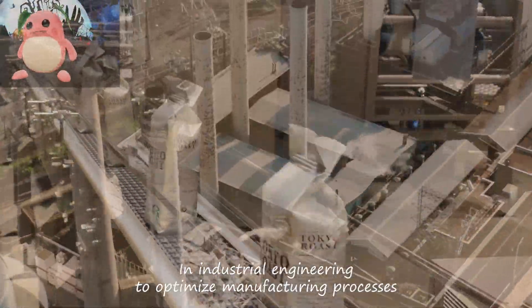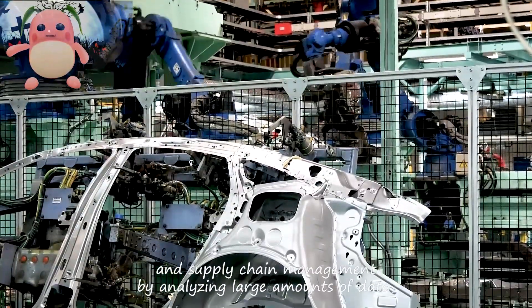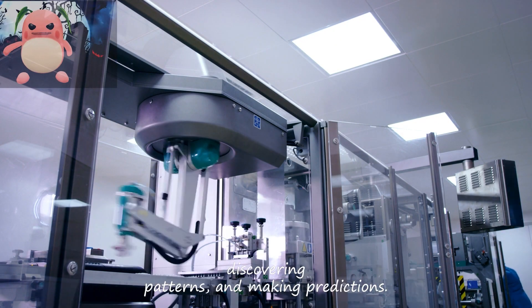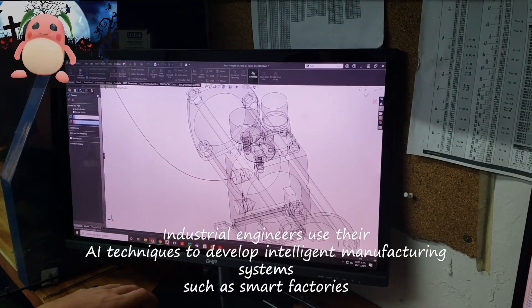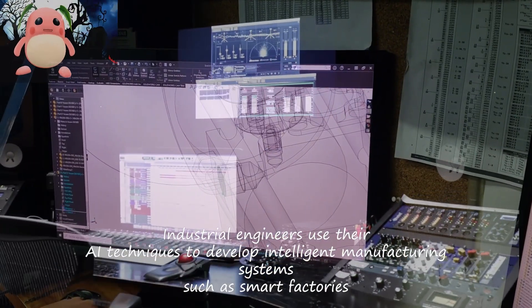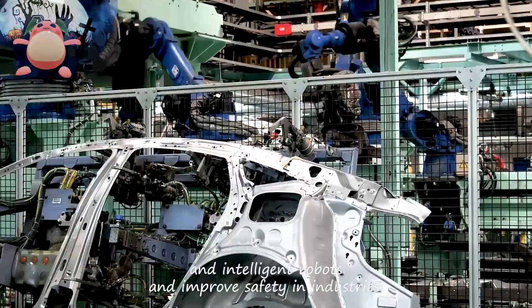In industrial engineering, AI is used to optimize manufacturing processes and supply chain management by analyzing large amounts of data, discovering patterns, and making predictions. Industrial engineers use AI techniques to develop intelligent manufacturing systems such as smart factories and intelligent robots and improve safety in industries.